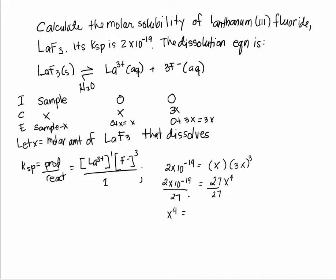That gives me X to the fourth equals seven point four one times ten to the negative twenty-one. We're not there yet; we're looking for X, not X to the fourth. So what I will do is raise both sides to the power of one-fourth.